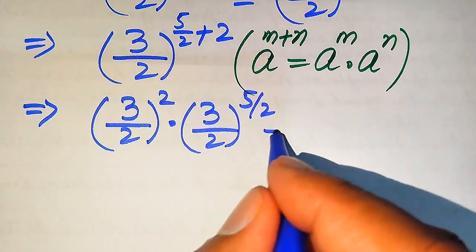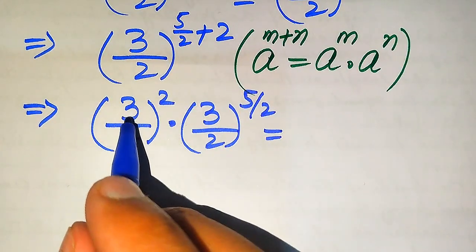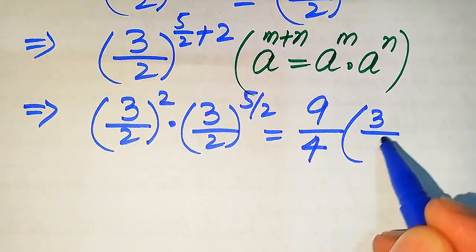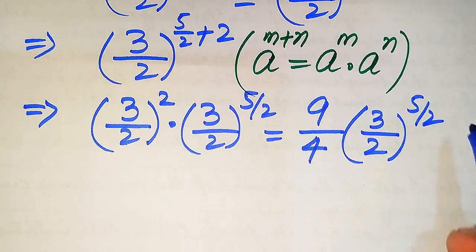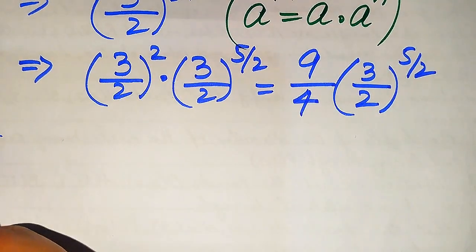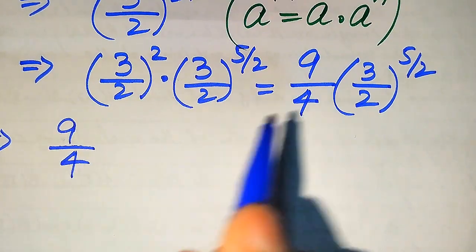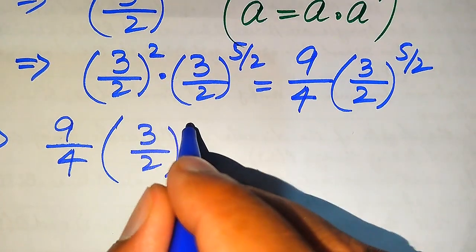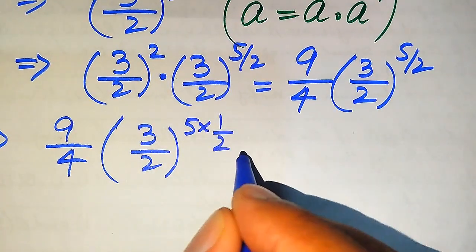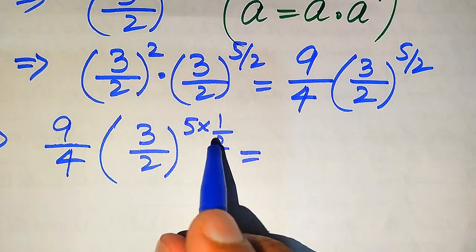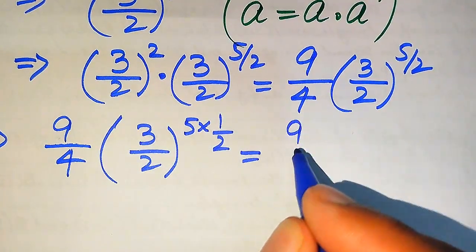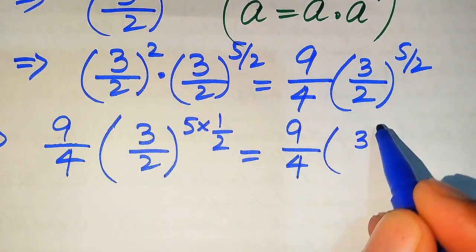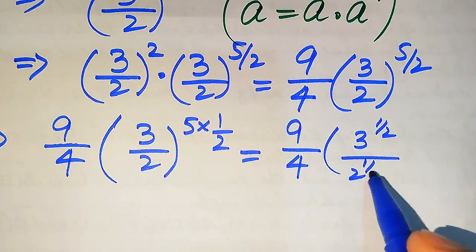We apply the exponent 2 separately on both values: 3 squared becomes 9 and 2 squared becomes 4, giving us 9 over 4 into (3 divided by 2) to the power of 5 over 2. We then rewrite the exponent 5 over 2 as 5 multiplied by 1 over 2, and apply 1 over 2 separately on both values of the base.